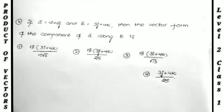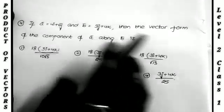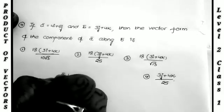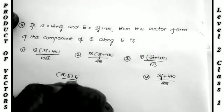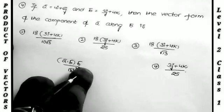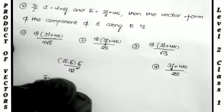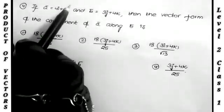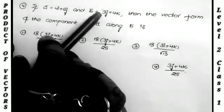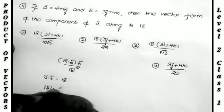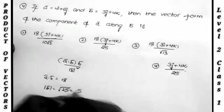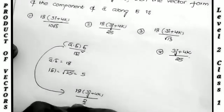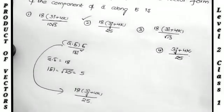Next: ā = 4i + 6j, b̄ = 3j + 4k. Find the vector component of ā along b̄. Formula: (a·b / |b|²) · b̄. a·b = i×0 + 6×3 + 0×k = 18. |b| = √(9 + 16) = √25 = 5, so |b|² = 25. Answer = 18·(3j + 4k)/25, which is the second option.